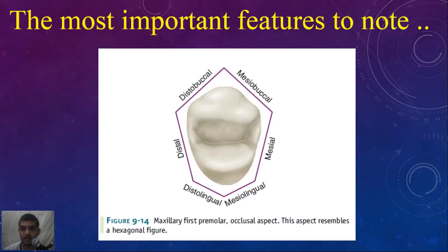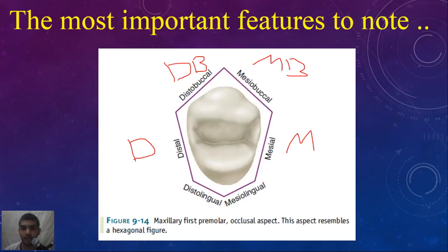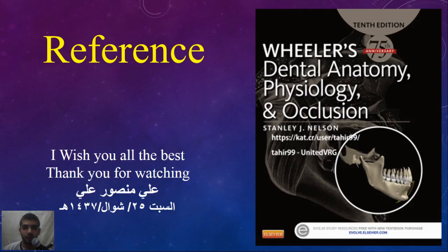From an occlusal aspect, the maxillary first premolar is hexagonal in shape, because the lingual and buccal sides are each divided into mesio-buccal and disto-buccal, and mesio-lingual and disto-lingual. So it is hexagonal in shape from an occlusal aspect. Thank you for watching, and inshaAllah we will meet in the next video about the maxillary second premolar.